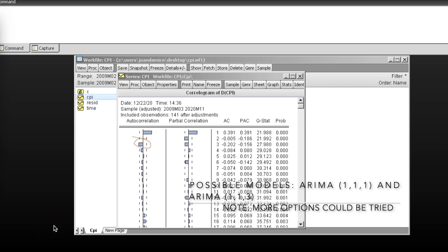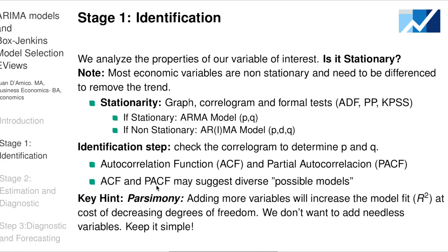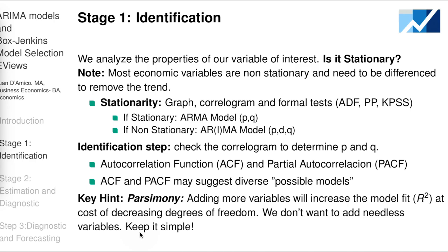A key concept here is parsimony. Adding more variables increases model fit and R-squared, but at the cost of decreasing degrees of freedom. We don't want to add needless variables — we don't want to do an AR(99) or difference the variable 25 times. We want to keep it simple. Parsimony is very important.